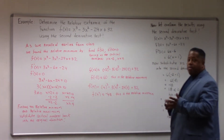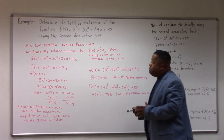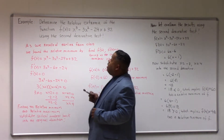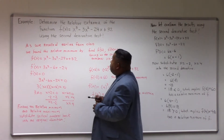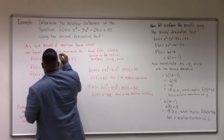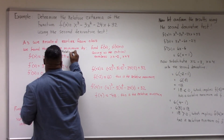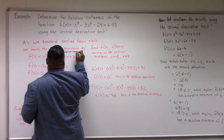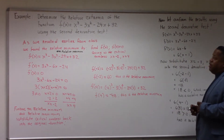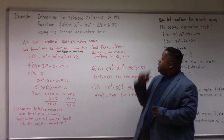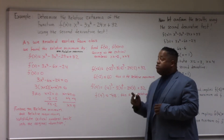We did this problem in class to find the relative minimum and relative maximum. As we recall from class, we found the relative minimum and relative maximum by finding the first derivative and then setting the first derivative equal to zero, giving us critical numbers x equal to negative two and x equal to four.